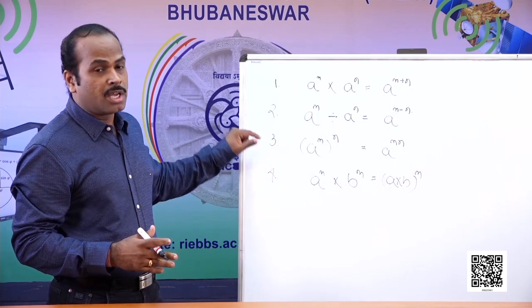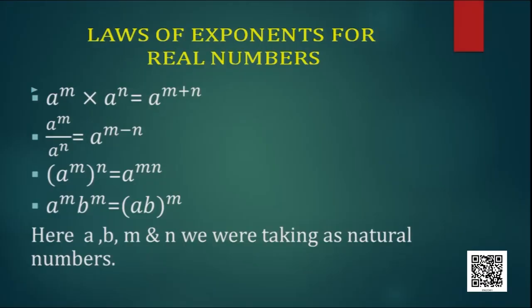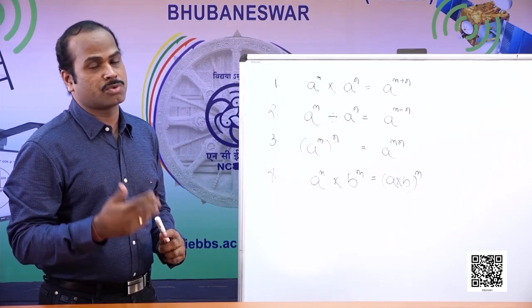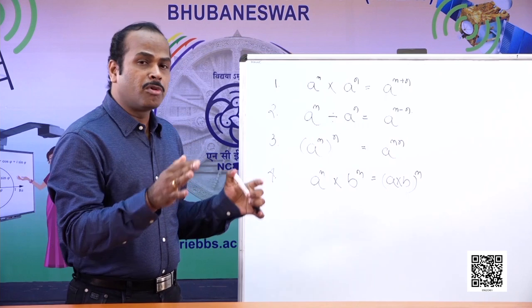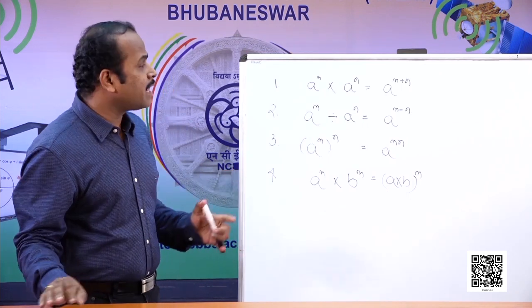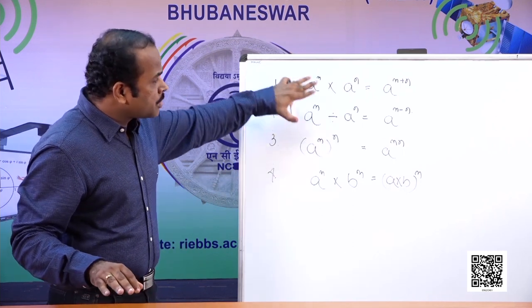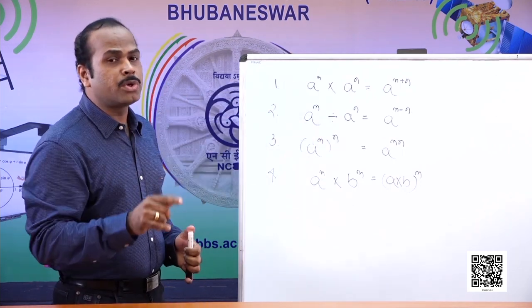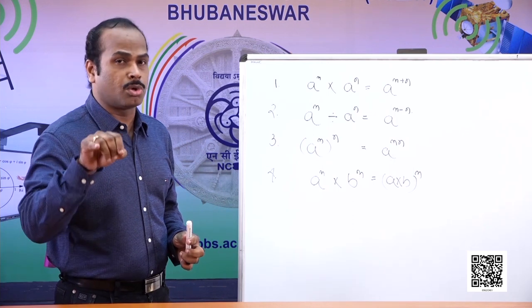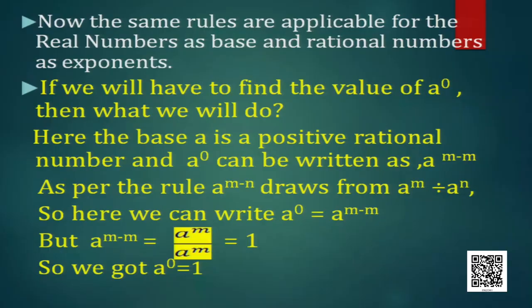In these laws, a, b, m, and n were all taken as natural numbers. But now we are discussing real numbers, so we need to extend these laws. Let us observe: if I need to express a to the power 0, how should I write it? Let us find a to the power 0 using the laws of exponents.